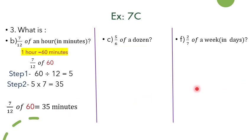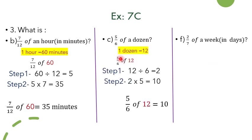Similarly, bit number c: 5 by 6 of a dozen. A dozen equals 12 items. The question becomes 5 by 6 of 12. Divide 12 by the denominator 6, giving quotient 2. In step 2, 2 is multiplied with 5, giving 10. So 5 by 6 of a dozen is 10. Bit number f: 2 by 7 of a week. One week has 7 days, so we find 2 by 7 of 7. Step 1: divide 7 by 7, giving quotient 1. Step 2: multiply 1 with 2, giving the answer 2. So 2 by 7 of a week is 2 days.